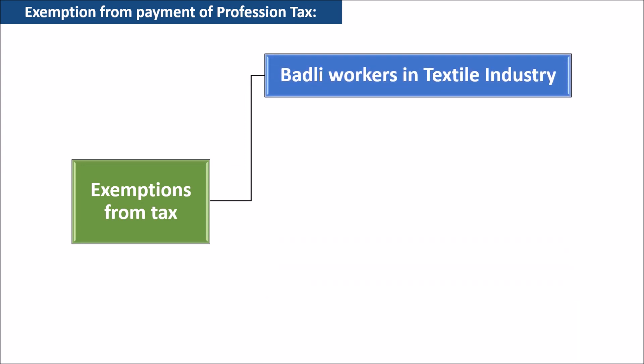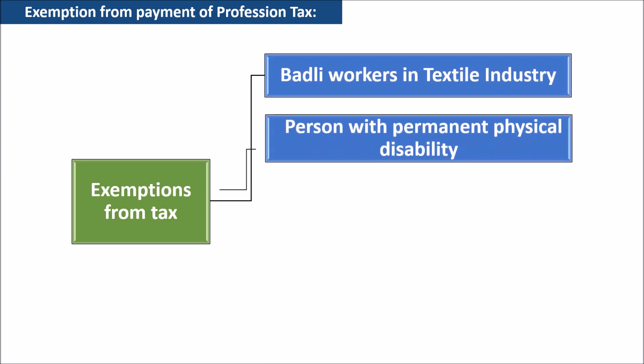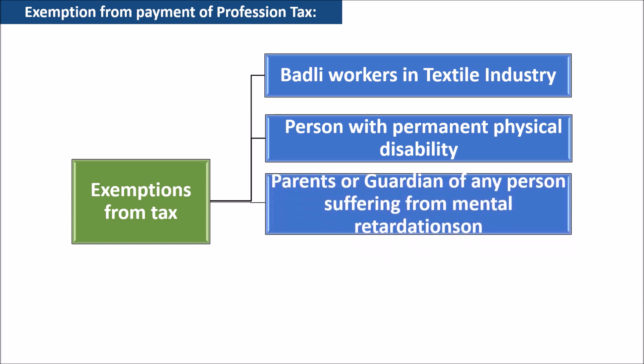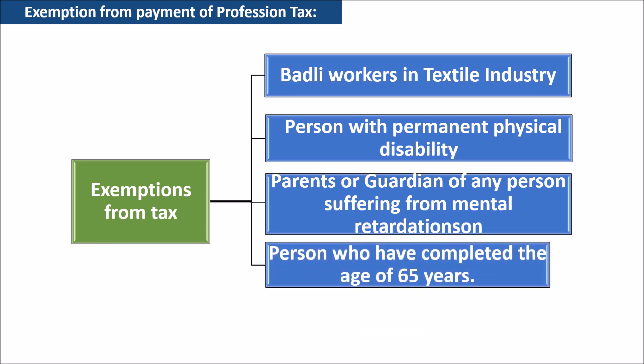There are some exemptions from professional tax in Maharashtra under the Maharashtra Professional Tax Act 1975. Bidi workers in the textile industry are not required to pay professional tax. Any person suffering from a permanent physical disability including blindness, which considerably reduces their capacity for normal work or gainful employment, is exempt. Parents or guardians of any person suffering from mental retardation as certified by a psychiatrist working in a government hospital are also exempt. Persons who have completed the age of 65 years are also exempt.